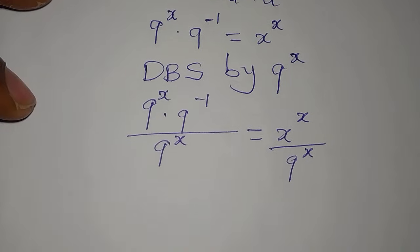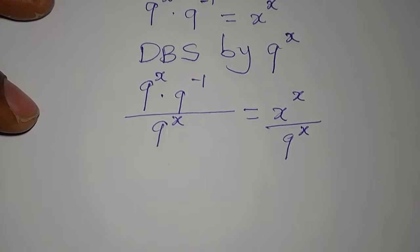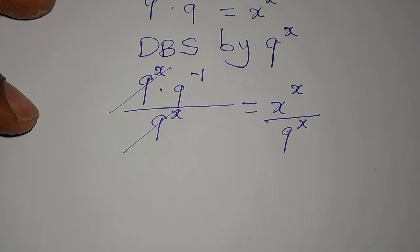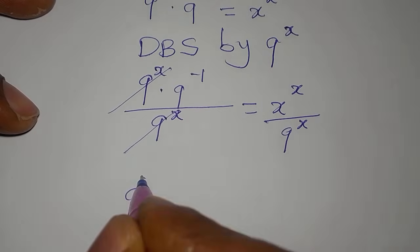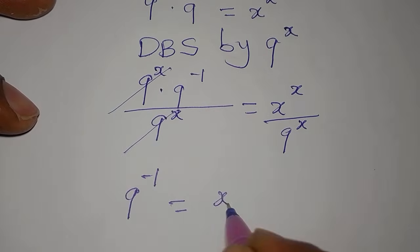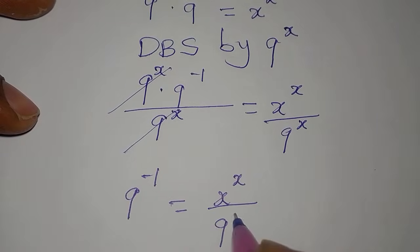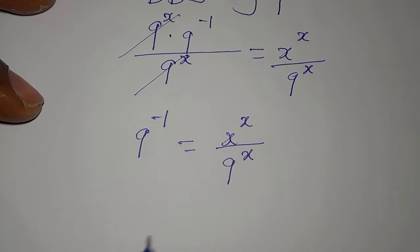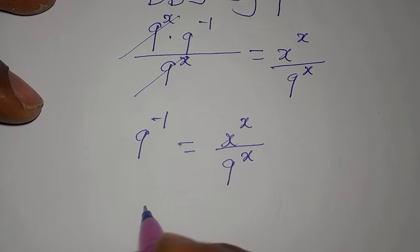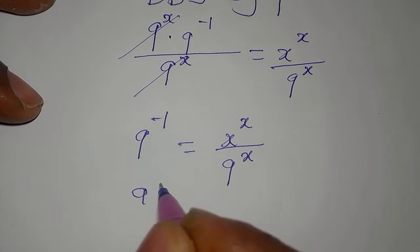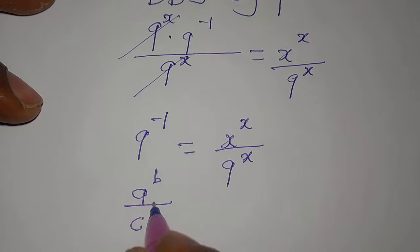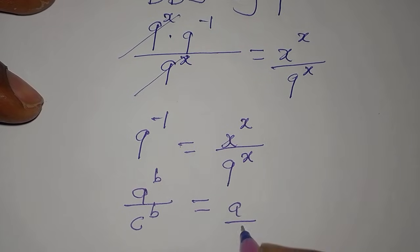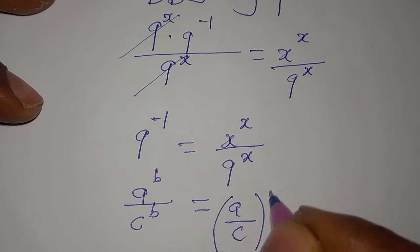We can now cancel out the 9 to the power of x, leaving 9 to the power of negative 1 equal to x to the power of x over 9 to the power of x. We then apply another law: a to the power of b over c to the power of b equals the quantity a over c, raised to the power of b.